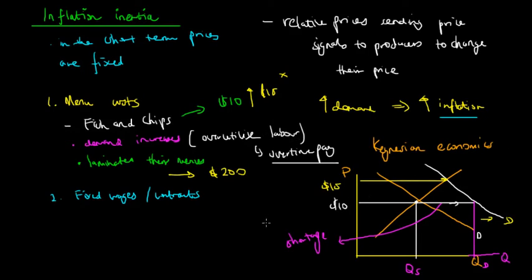Secondly, we consider wages and contracts. So sometimes, let's assume that demand decreases. So the demand has actually shifted to the left, and therefore, producers are becoming unprofitable in this market.